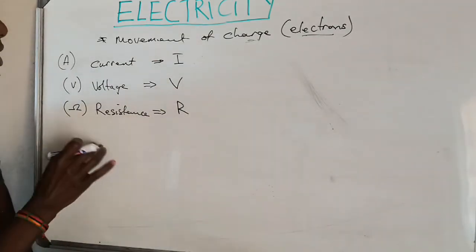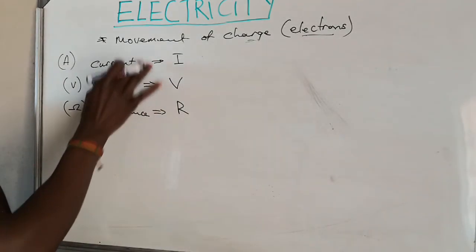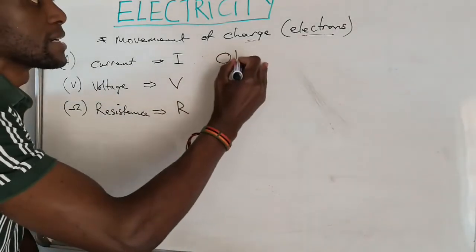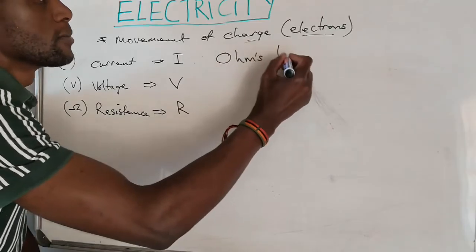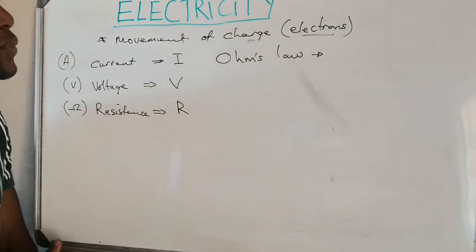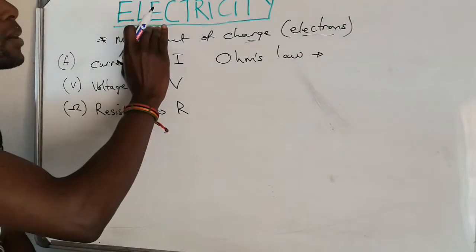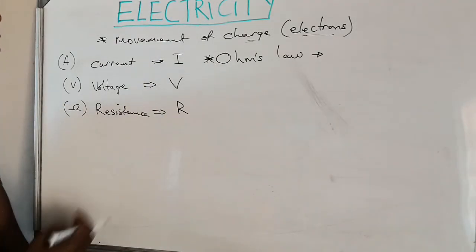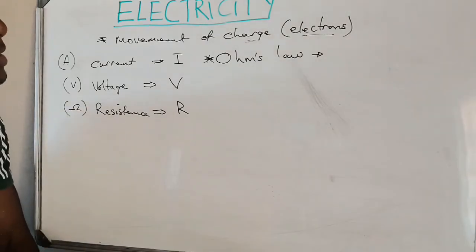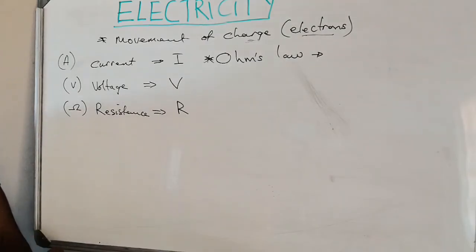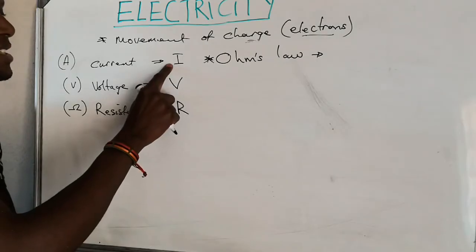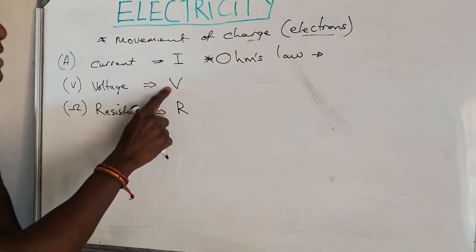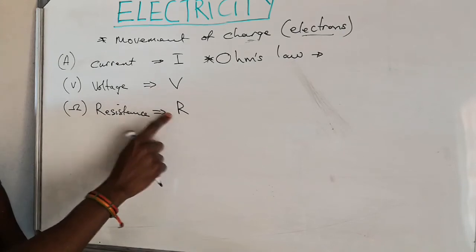The relationship between these three is summarized into what is known as Ohm's Law. Ohm's Law gives you a gateway into understanding what electricity is. Ohm's Law states that the amount of current flowing in a circuit is directly proportional to the voltage and inversely proportional to the resistance.